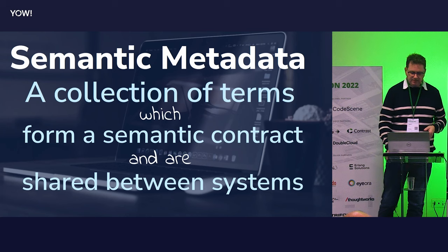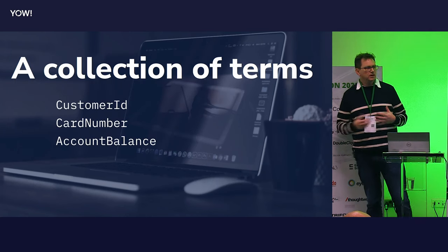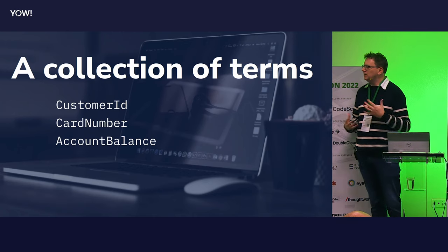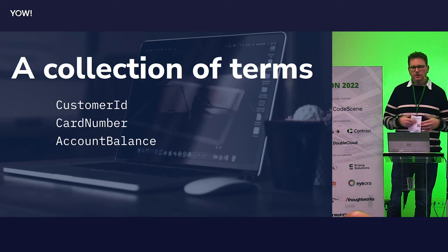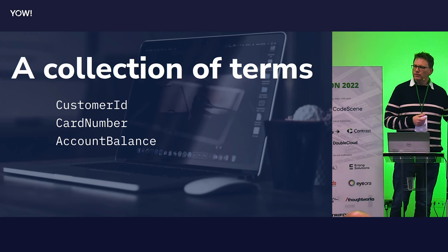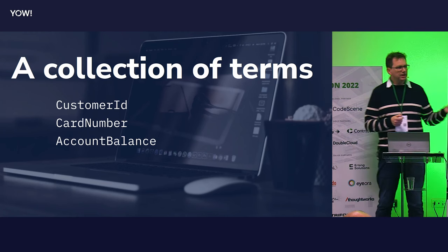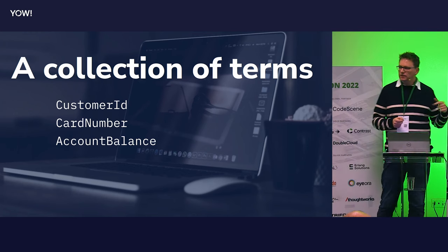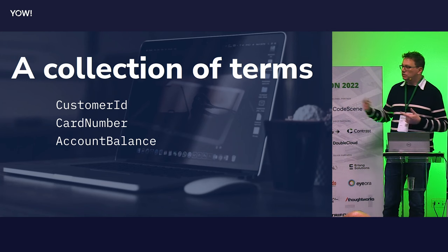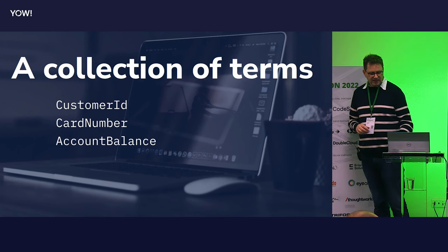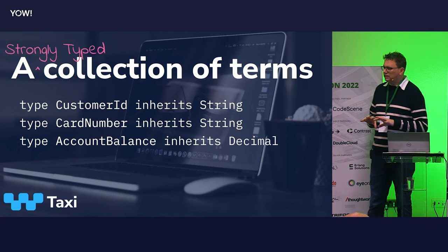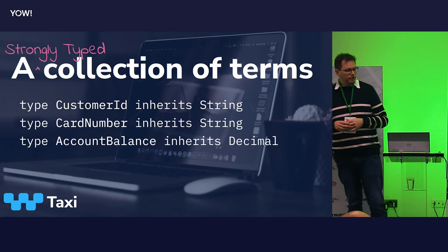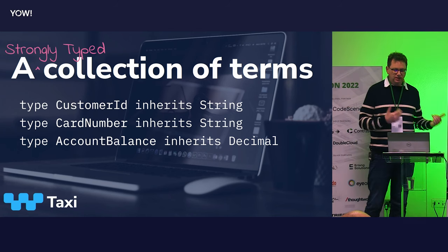That leads us to the idea of semantic metadata, which I like to define as a collection of terms which form a semantic contract and are shared between systems. Let's break that down. A collection of terms — customer ID, card number, account balance — we've seen how to use these to describe the ideas in our data. It doesn't really matter what the field name is. The semantic contract is what matters: you will find in this field a customer ID, you will find in this field a card number. Taxi gives us a way of taking those ideas and turning them into a type system.